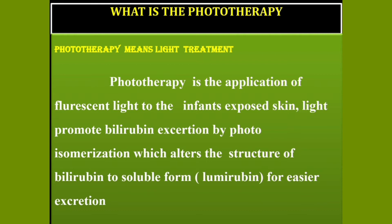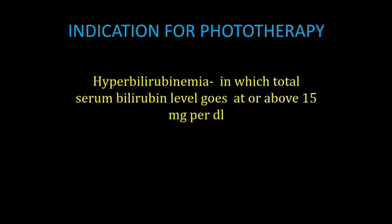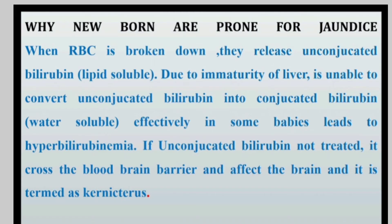The indication of phototherapy: when a baby's serum bilirubin levels go above 15 milligram per deciliter, they need phototherapy treatment. Now, why are newborns prone to jaundice? When RBCs are broken down, they release unconjugated bilirubin.